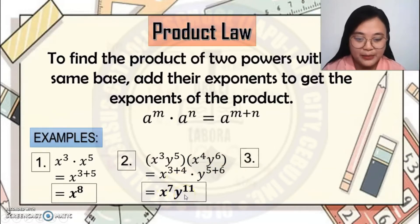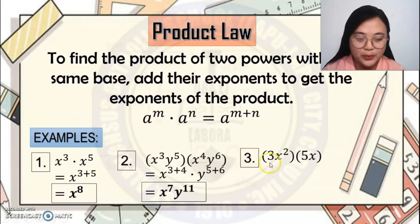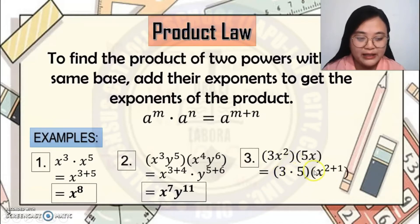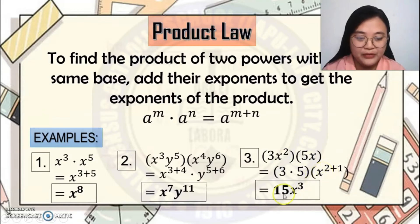Last example: 3x squared times 5x. First, multiply the numerical coefficients 3 and 5. So 3 times 5, then add the exponents for x: 2 and 1, giving x raised to 2 plus 1. Simplify — the answer is 15x cubed.